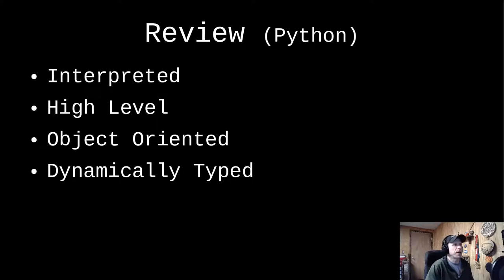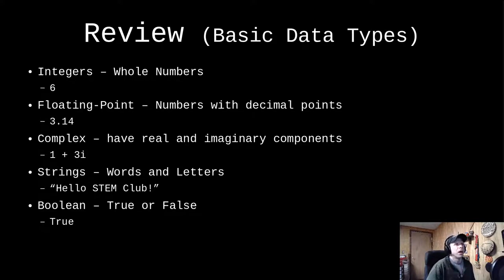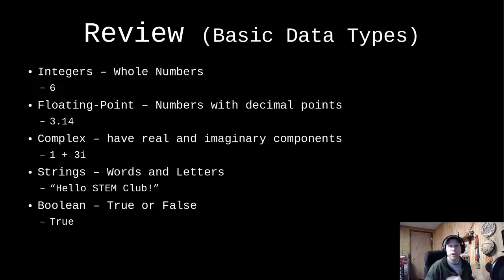Lastly, Python is dynamically typed, meaning I don't have to say 'store this as an integer' — Python can pretty much figure out what I want, and there are only rare cases where I have to be explicit. We had integers, floats — the difference being floats have decimal points — complex numbers, strings inside of quotes, and Boolean values which can be true or false.